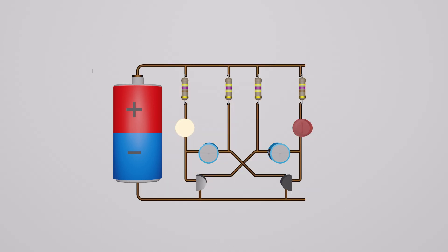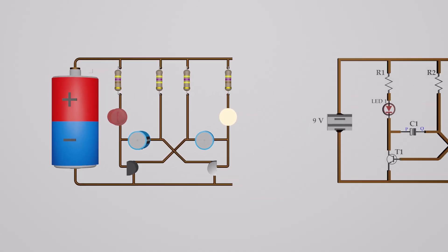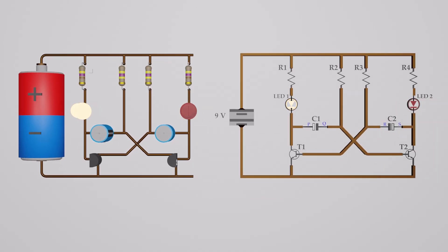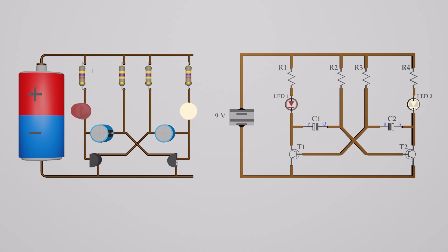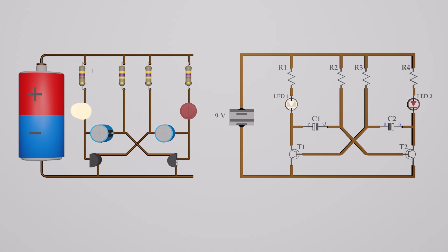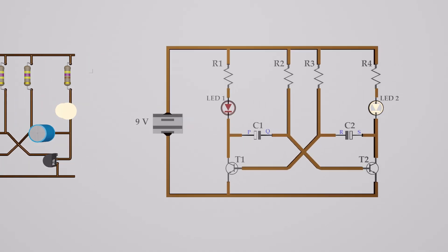For ease of understanding, let's use the schematic diagram of the circuit. This simple LED flasher circuit is made by using two NPN transistors, four resistors, and two capacitors. The speed of blinking can be changed by changing the value of the capacitors.